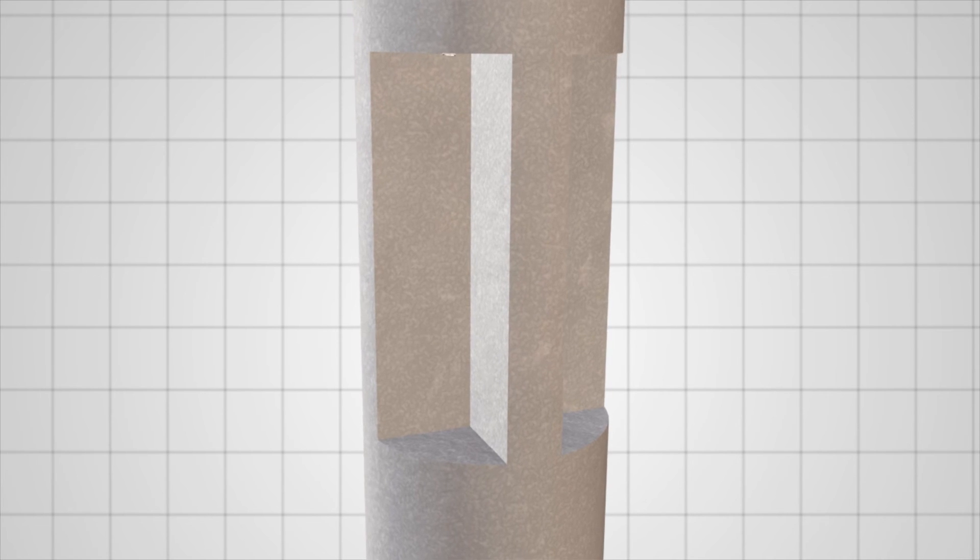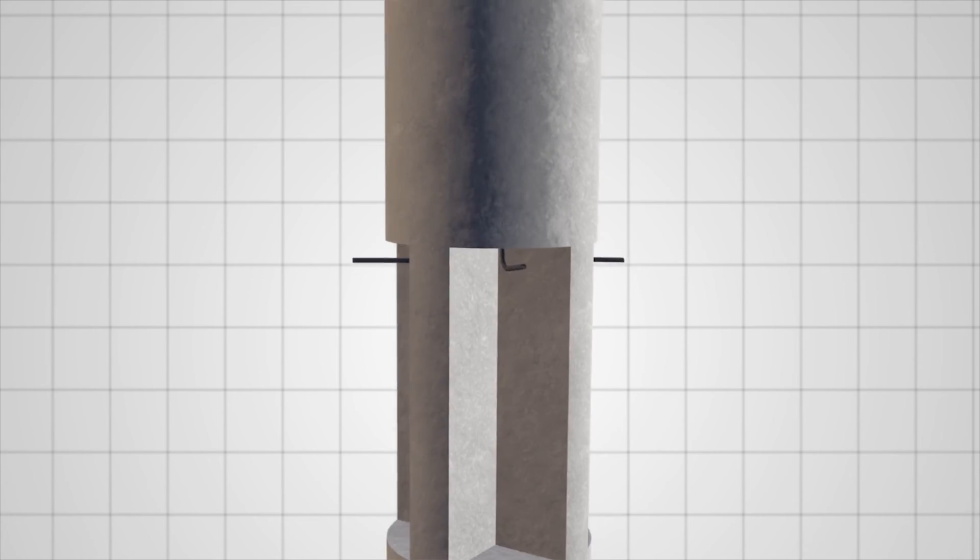The four anti-rotational cavities keep the foundation from rotating after backfill and allow for ease of access when installing the electrical conduit.